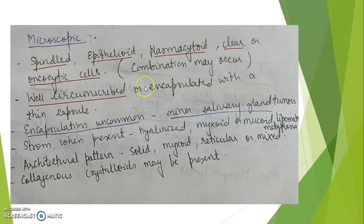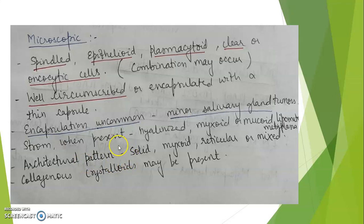Myoepitheliomas present in minor salivary glands are usually not encapsulated — encapsulation is uncommon in minor salivary gland tumors. The stroma, when present, may be hyalinized, show myxoid or mucoid change, or lipomatous metaplasia. Architecturally, cells may be arranged in a solid, myxoid, or reticular pattern, or a mixed pattern.